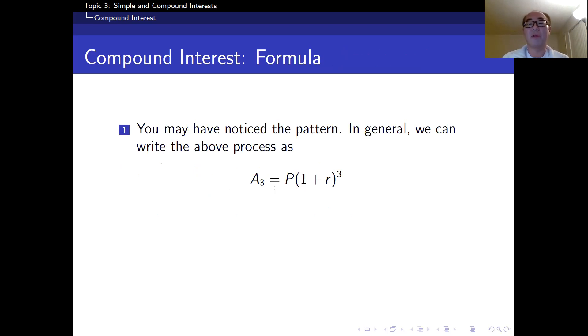Actually, I can simplify the process. This is a formula for this case. A sub 3 is equal to P times 1 plus R to the power 3. So that's a formula. Later we're going to see more general formula. So for any years, T, we just replace 3 by T. A sub T is equal to P times 1 plus R to the power T.